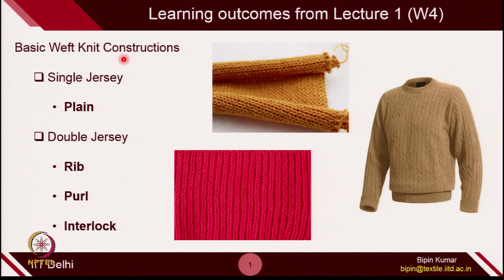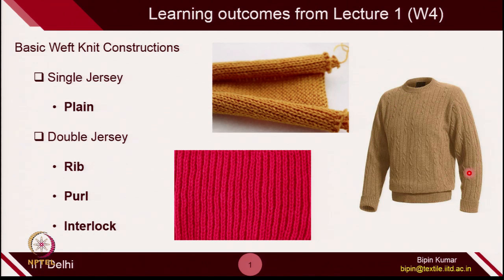Let's start from lecture 1, where I have divided weft knitted construction into 4 categories. One is single jersey, where you have just plain knitted construction. In double jersey, you have 3 types of constructions which are quite popular in the knitting world. These fabric constructions play a major role because the behavior of the fabric will change depending on what type of double jersey structure you are using. Whenever you are making a full body garment, you have to carefully choose these constructions at different locations.